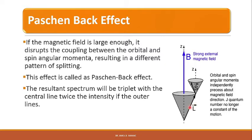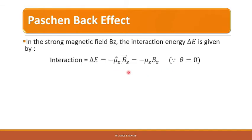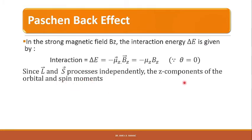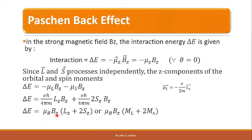L and S are each space-quantized independently in the magnetic field, with components ML and MS respectively. In the strong magnetic field BZ, the interaction energy ΔE is given by: ΔE = −μZ·BZ = −μL·BZ − μS·BZ. This gives ΔE = (eℏ/4πm)·LZ·BZ + (eℏ/4πm)·2SZ·BZ, which can be written as ΔE = μB·BZ·(LZ + 2SZ) = μB·BZ·(ML + 2MS).